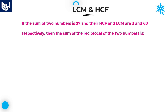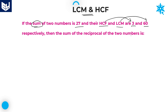If the sum of two numbers is 27, and their HCF and LCM are 3 and 60 respectively — this is the HCF and this is the LCM of those two numbers — then we need to find the sum of the reciprocals of the two numbers.